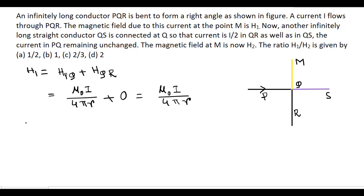Now calculate H2, that is the magnetic field due to PQ: HPQ plus HQR plus HQS. Now the current is same in PQ, so the magnetic field is again mu 0 I divided by 4 pi R.